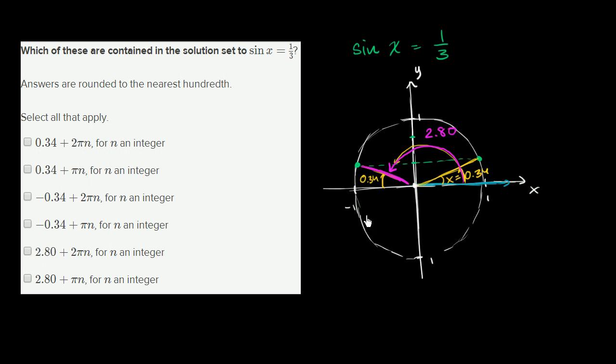That's not all of the values. We can add multiples of 2π to each of these. So 2.80 plus any multiple of 2π, so 2πn where n is an integer, or we could take 0.34 and add any multiple of 2π, so 2πn where n is an integer. Our solution set is 2.80 radians plus 2πn where n is an integer, and 0.34 plus 2πn where n is an integer.